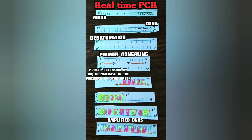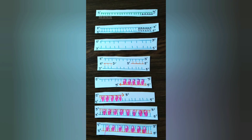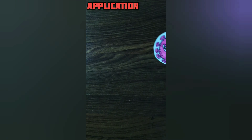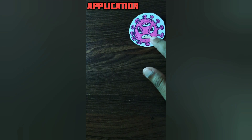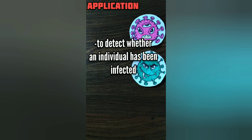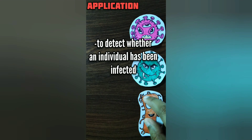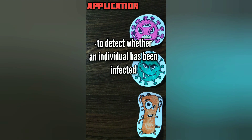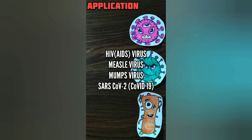Both of these techniques, combined or individually, are used for testing for the presence of a particular RNA. Some viruses have an RNA genome, and theoretically RT-PCR and qPCR could be used to detect whether an individual has been infected by the virus — for example, HIV, measles, mumps virus, and very recently, for the detection of the COVID-19 coronavirus.